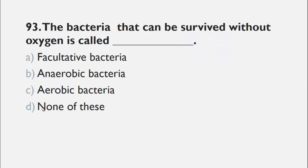MCQs number 93 is, the bacteria that can be survived without oxygen is called a facultative bacteria, b anaerobic bacteria, c aerobic bacteria, and d none of these. Facultative bacterias are those bacteria which can survive with or without oxygen. Anaerobic bacteria are those bacteria which can survive without oxygen. And aerobic bacterias are those bacteria which require oxygen for their survival. So, the right choice for this question is b anaerobic bacteria.